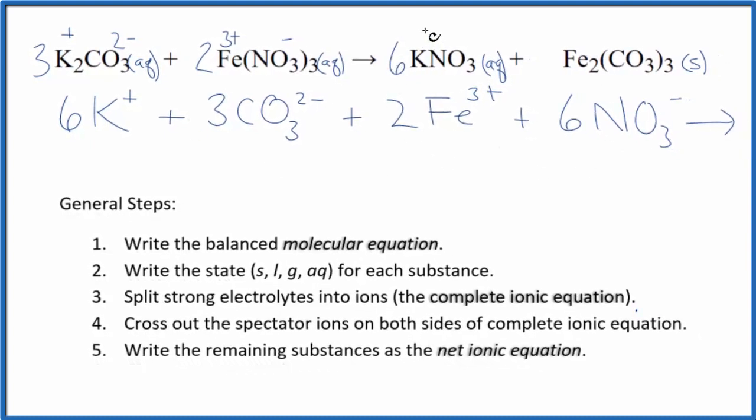For the products, we'll have six potassium atoms just like the reactants, plus six nitrate ions. And then with net ionic equations, we don't split solids apart, so we're gonna keep the iron three carbonate together. So this is the balanced complete ionic equation for potassium carbonate plus iron three nitrate.